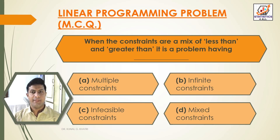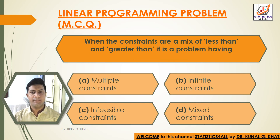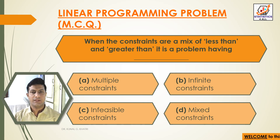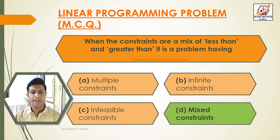Question 13: When the constraints are a mix of less than and greater than, it is a problem having dash. Option A: Multiple constraints. Option B: Infinite constraints. Option C: Infeasible constraints. Option D: Mixed constraints. Answer: Option D — When the constraints are a mix of less than and greater than, it is a problem having mixed constraints.